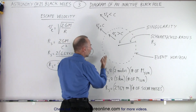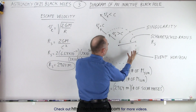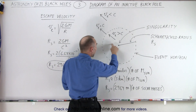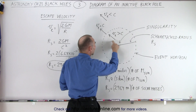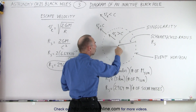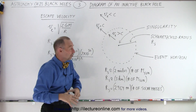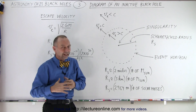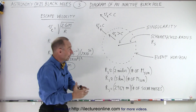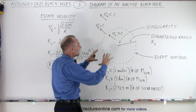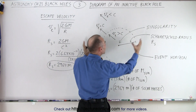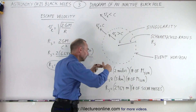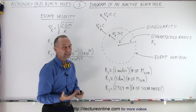Then we have a spherical region called the event horizon. It's a boundary, and that boundary means that if you're inside the event horizon, in order to get out, you must be traveling faster than the speed of light. The escape speed is faster than the speed of light, and since nothing can move faster than light — including light itself — nothing can get out. So anything inside the event horizon simply cannot leave. You're stuck there forever.